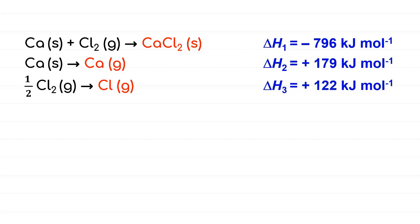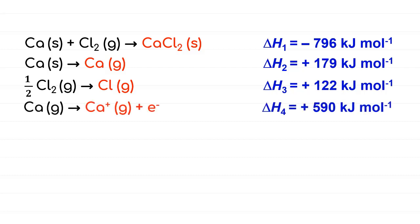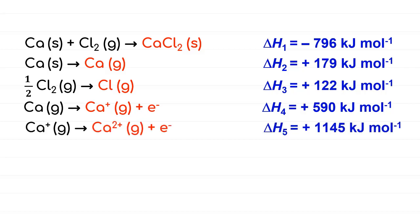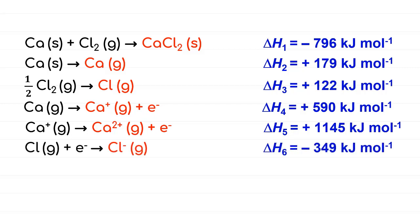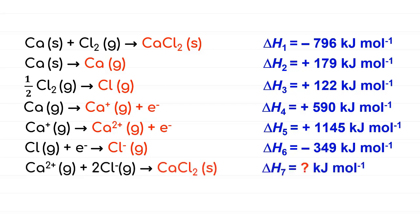Calcium has a +2 charge. To change calcium gas to Ca²⁺ gas, calcium must undergo both first and second ionization energy, represented as ΔH4 and ΔH5. For chlorine, it has a charge of −1, so to form Cl⁻ in the gaseous state, chlorine must gain one mole of electrons, giving electron affinity ΔH6. Lastly, the gaseous ions will combine to form the solid again by releasing an amount of lattice energy denoted by ΔH7.